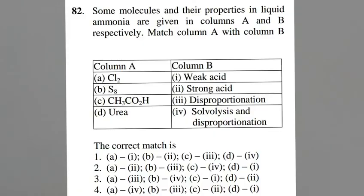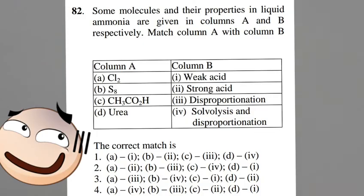In yet another question from December 2016, please pause for a moment and check if you can get the answer. If you carefully observe option 4, in which acetic acid is shown as a strong acid in liquid ammonia, it becomes the right choice.